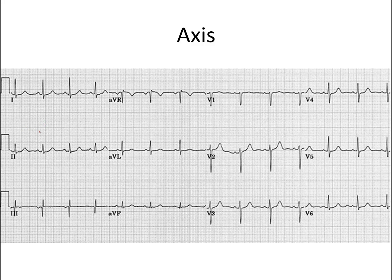Now that we have a good idea of what to look for in rhythm, let's move on to axis. For axis, all you really need is lead one and lead two. You want to look at where the majority of the deflection in the QRS complex points. In lead one it points up — we call that positive. Negative deflection, by contrast, is when the majority points downward, as seen in V1, V2, or V3. For axis: if it's up in lead one and up in lead two, that is normal.